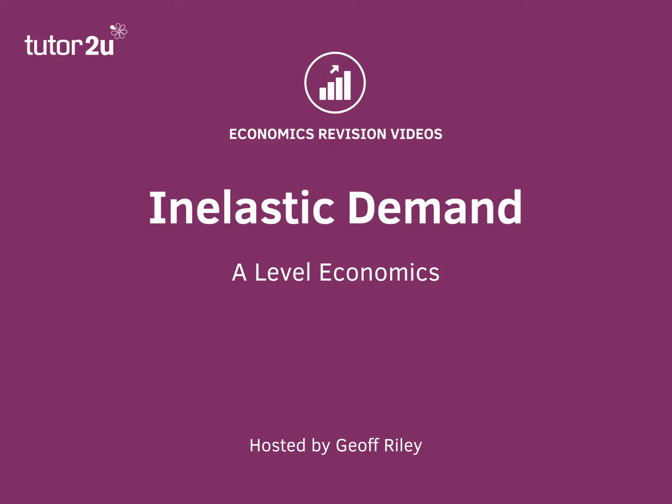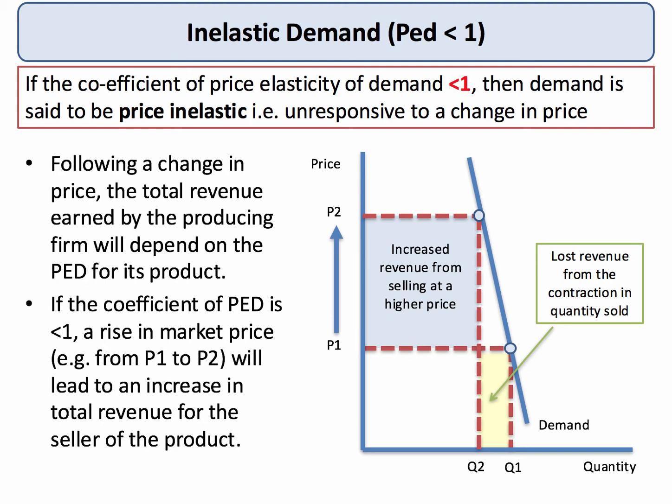As part of our revision on elasticity of demand, let's take a quick look at a demand curve which is inelastic. What that means is that the coefficient of price elasticity of demand is less than 1. Demand is price inelastic — demand is unresponsive to a change in the price. For example, a 20% increase in price might only lead to a 4% fall in demand. So 4 divided by 20 gives an elasticity of only 0.25, less than 1.